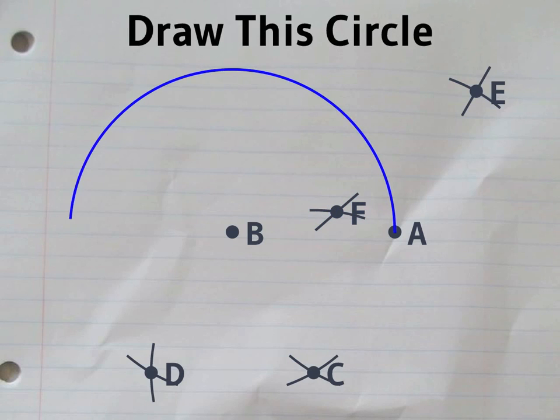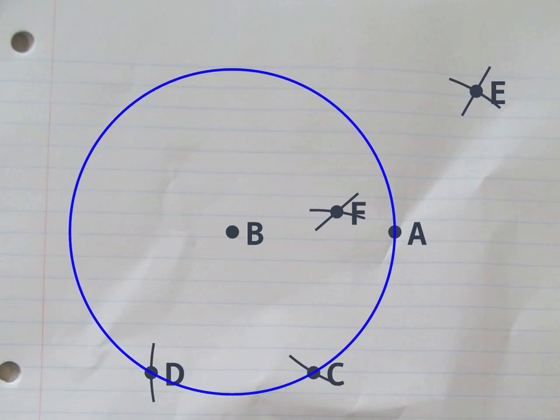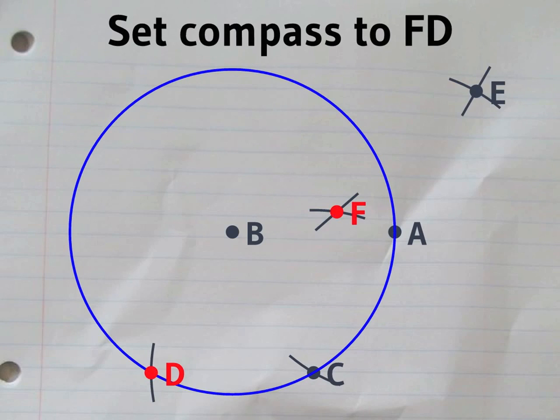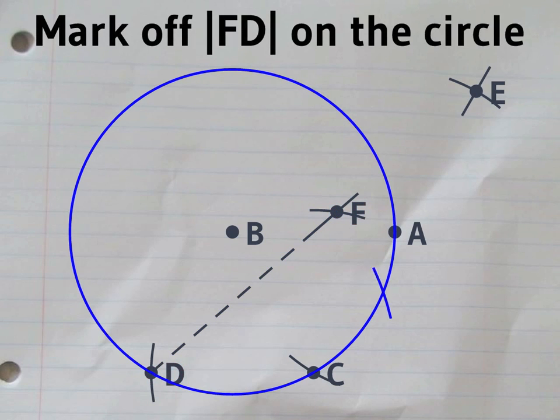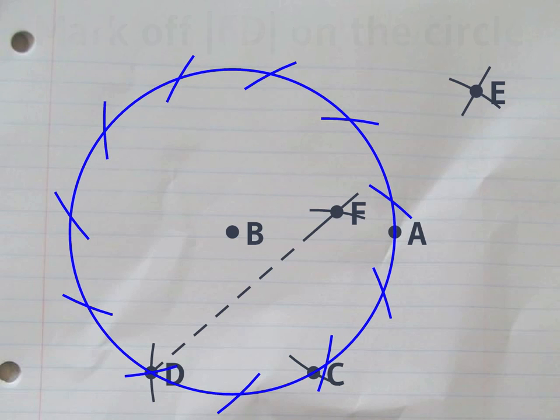Now redraw the circle centered on B. And set your compass to the distance from D to F. If you go round the circle three times marking off that distance, you'll have a set of points which is very, very close to the corners of a hendecagon.